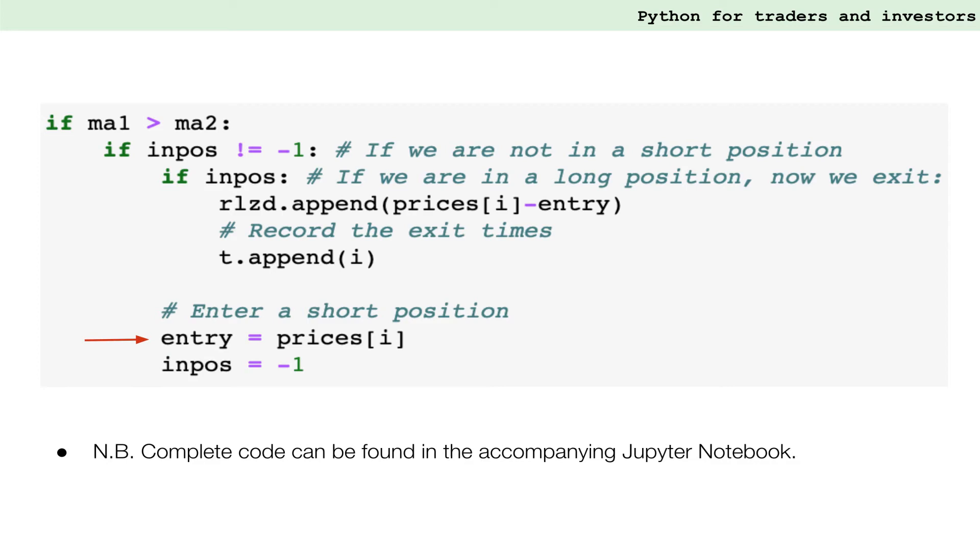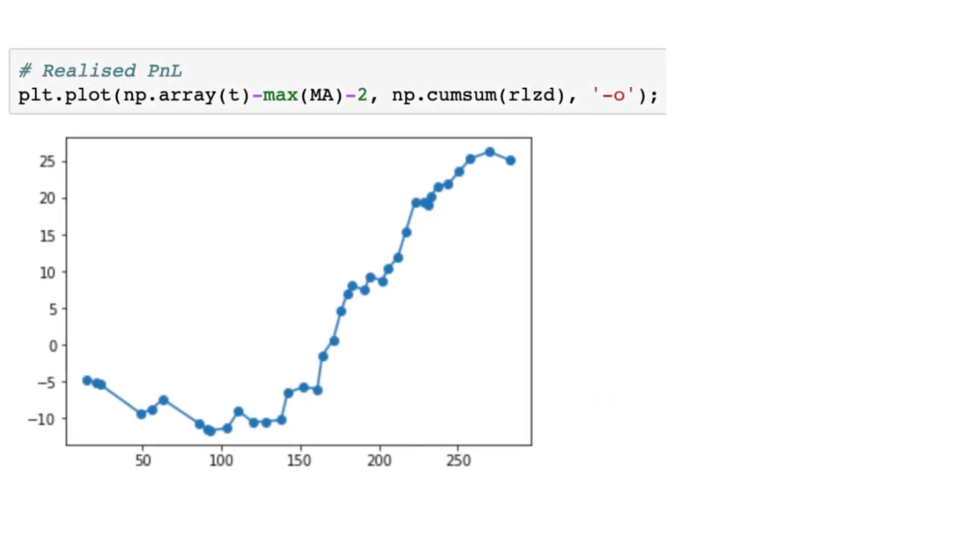Note that we update the entry price after the P&L calculation. Otherwise, they would always be zero. We also update our trade direction with inpos. Exit times are captured in the list T, which we need for plotting our results later. Now that we've handled entries and exits, let's plot the realized P&L of the strategy. This looks quite good. However, it does not tell us anything about our performance during the trades.